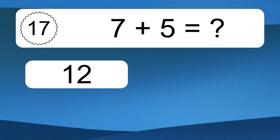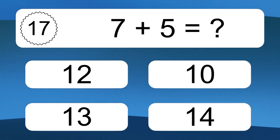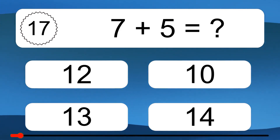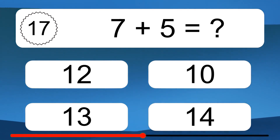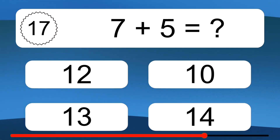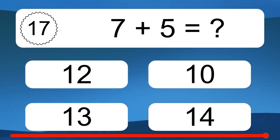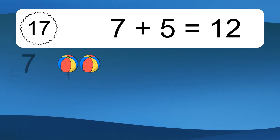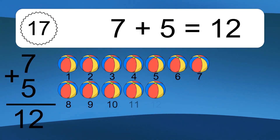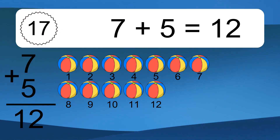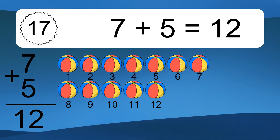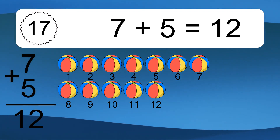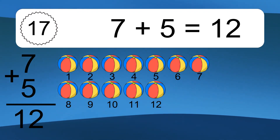7 plus 5 equals what? 7 plus 5 equals 12. Let's count it. 1, 2, 3, 4, 5, 6, 7, 8, 9, 10, 11, 12.